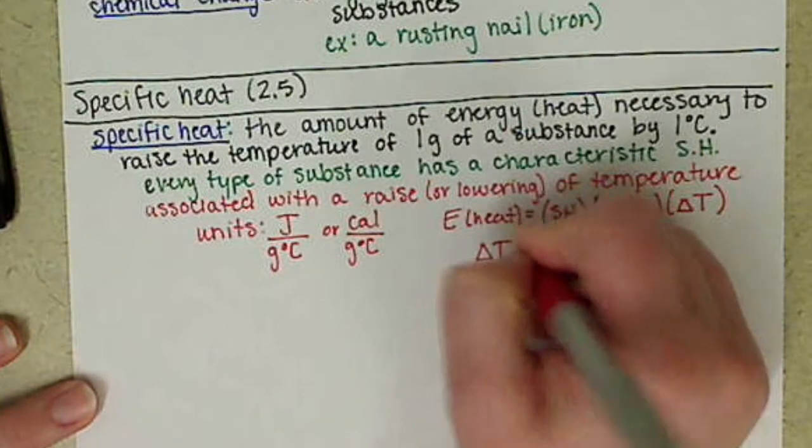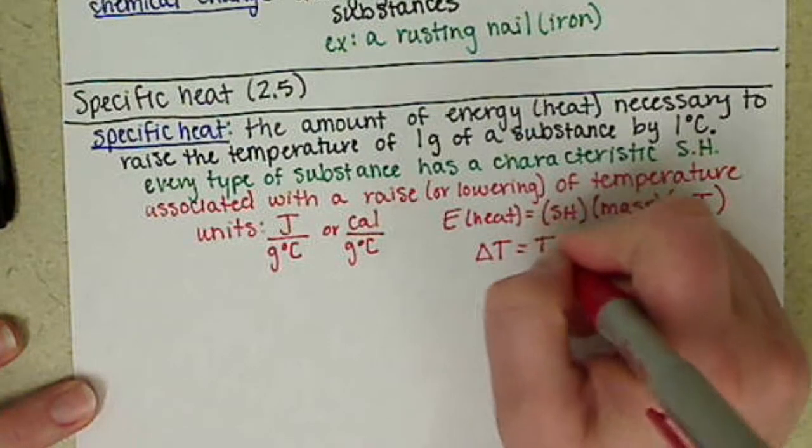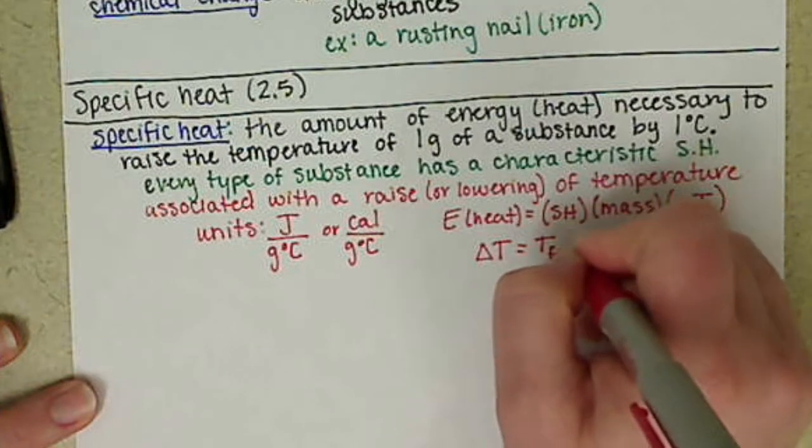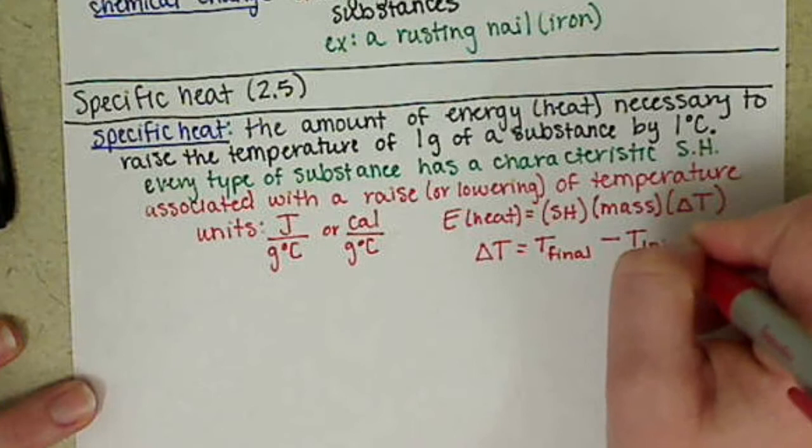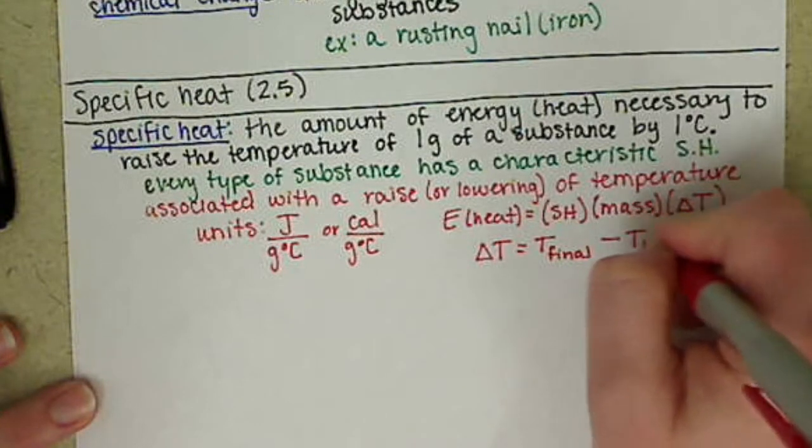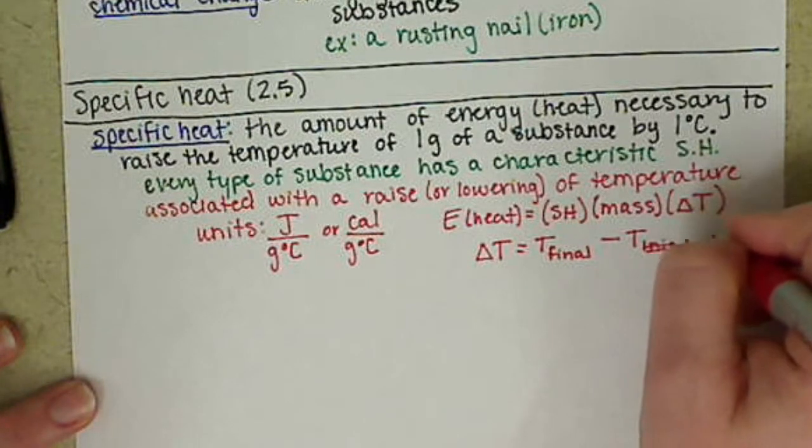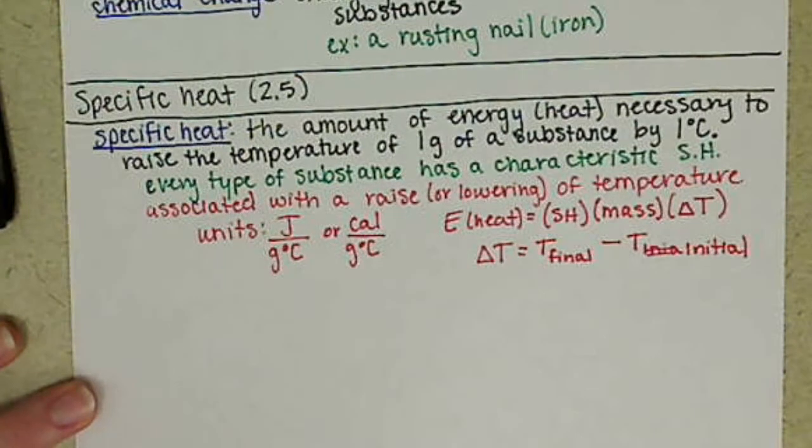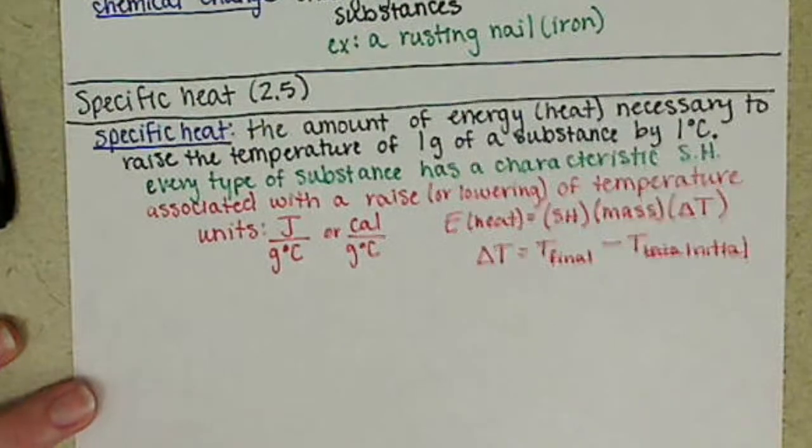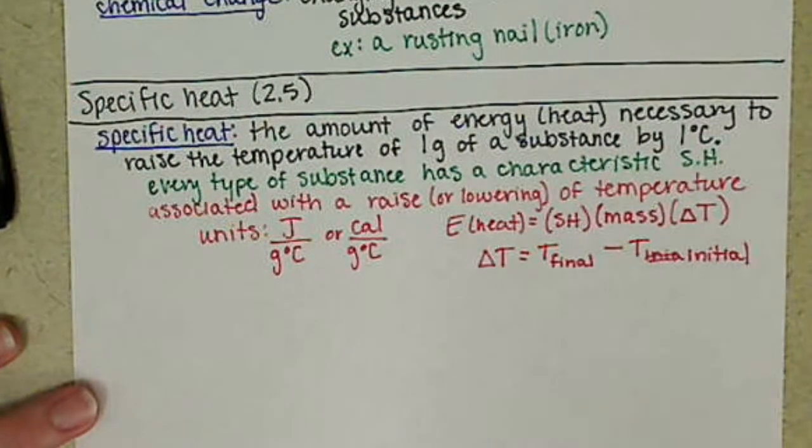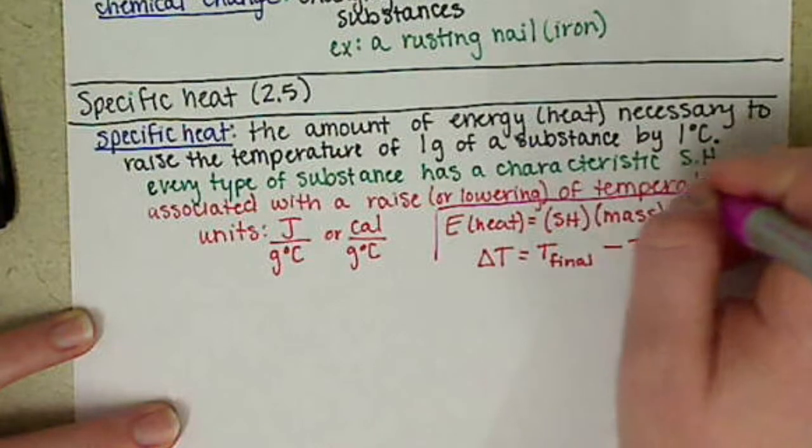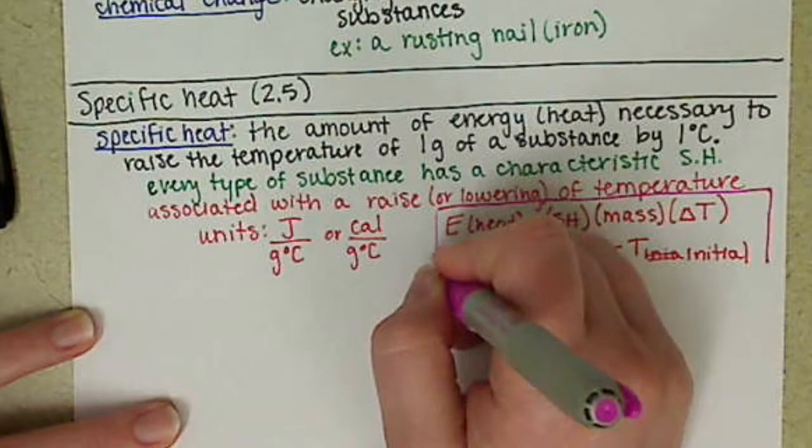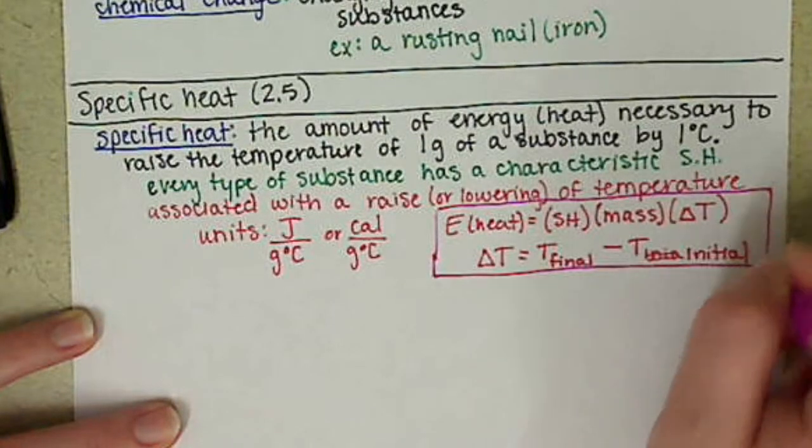And delta T is basically where we take our final temperature minus our initial temperature. So T final minus T initial, basically our difference in temperature.